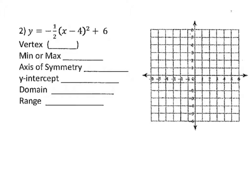Now here's number two. Just like last time, we graph with shifts first to find the vertex. The inside here has minus 4, saying it's moving right 4. Outside the parentheses I have plus 6, so that's telling me it's going up 6. So I go right 4, up 6 — right about here. Let's plot it and write down that coordinate: (4, 6).